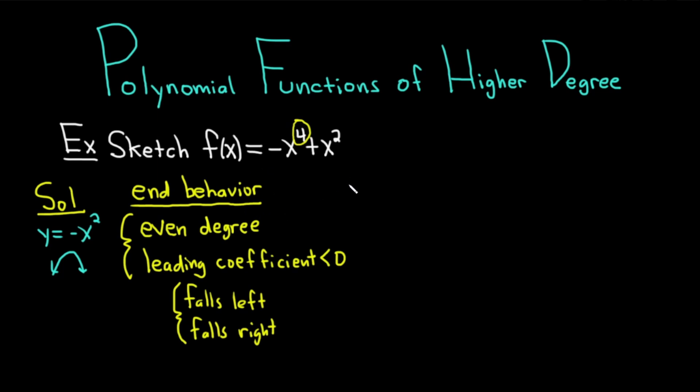The y-intercept is pretty easy to find. It's just going to be 0, but I'll write it down. To find the y-intercept, you just always plug in 0 for x. You get f of 0, which is equal to negative 0 to the 4th, plus 0 squared, which is just 0. So when x is 0, y is 0, we get 0, 0. That's the y-intercept.